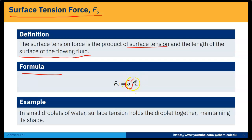What is σ? σ is the surface tension and L is the length. So Fs is σ into L. Then what is the example of surface tension force in fluid flow? In small droplets of water, surface tension holds the droplet together, maintaining its shape.